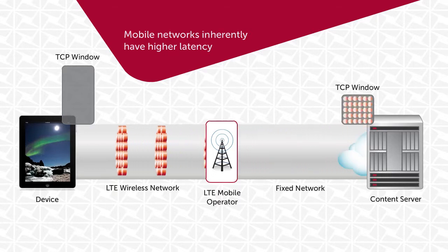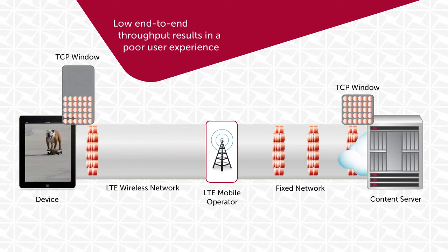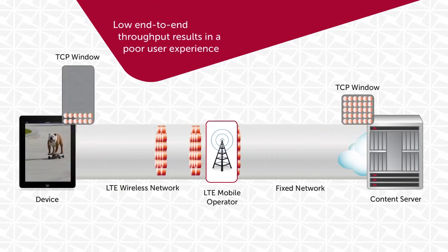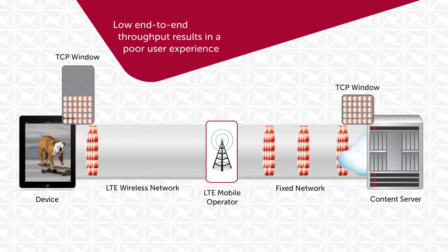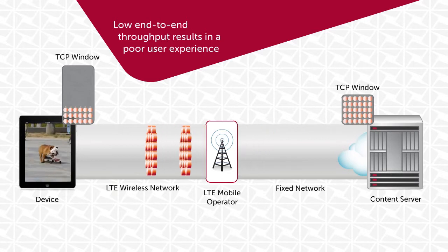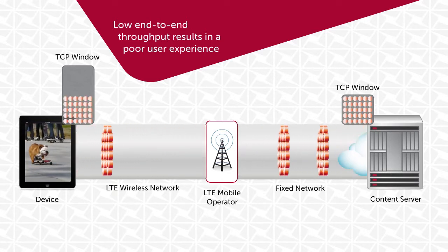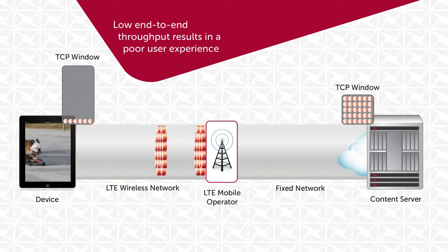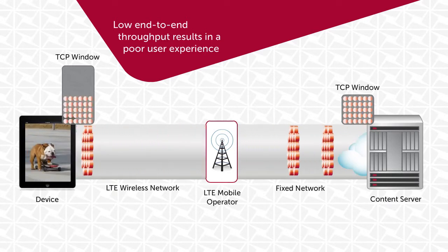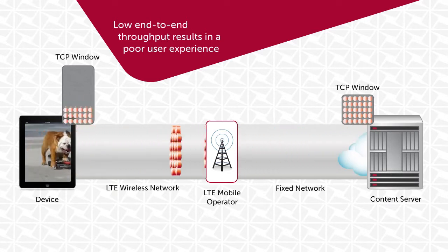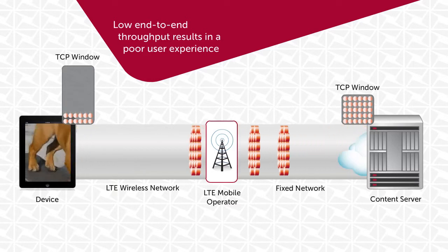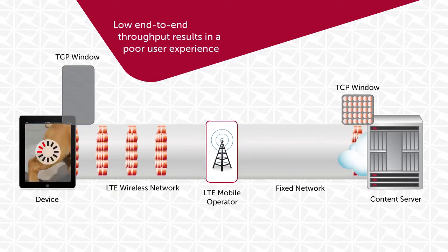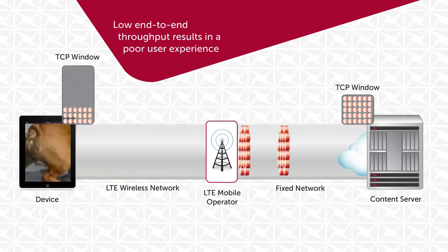Because of the higher latency, end-to-end throughput is considerably less than what the network is designed to support. This reduced throughput, caused by the disparity in window sizes between content servers and mobile devices, results in a poor user experience.